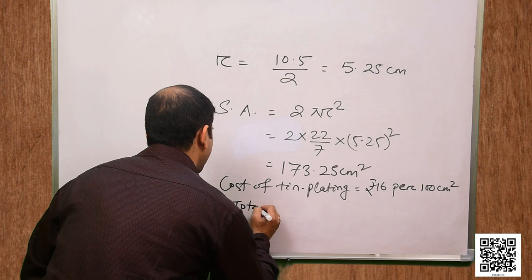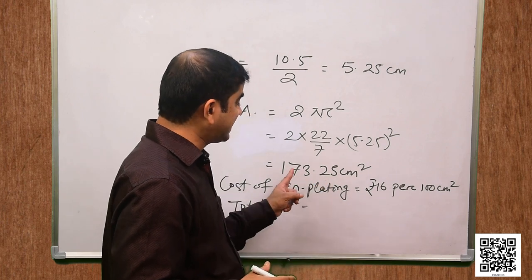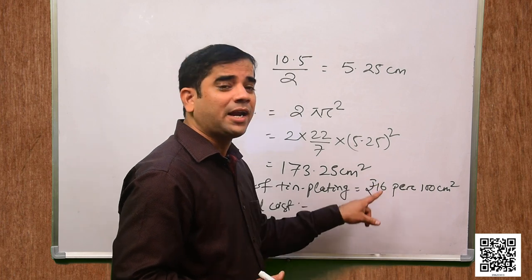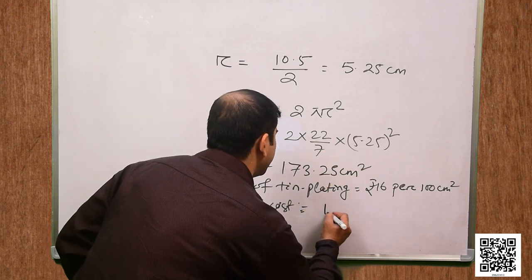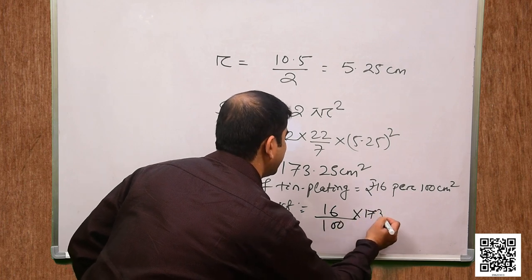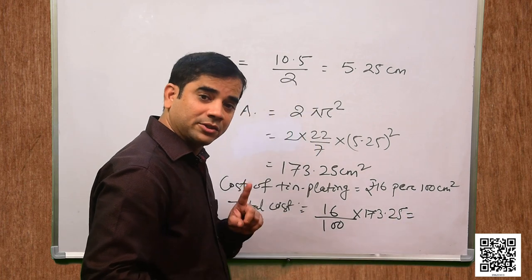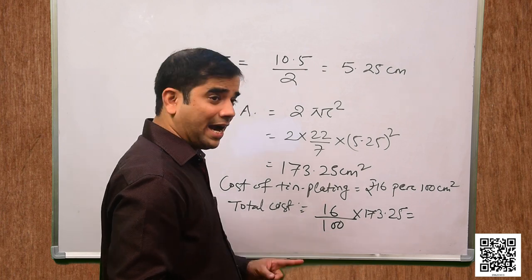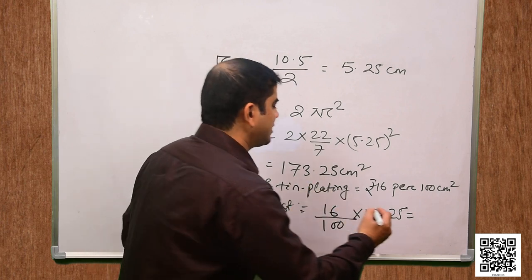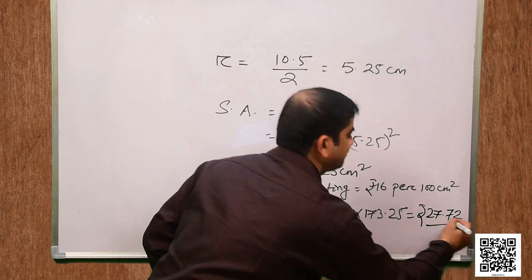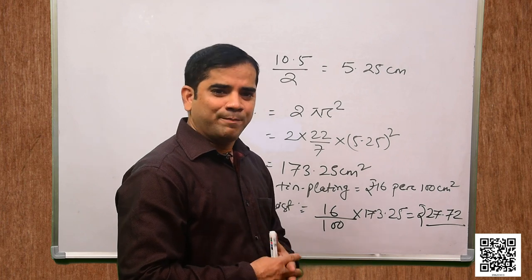The cost of tin plating is Rs 16 per 100 cm squared. So total cost for 173.25 cm squared is 16 divided by 100 into 173.25, which gives us Rs 27.72. This is the total cost for tin plating of the bowl.